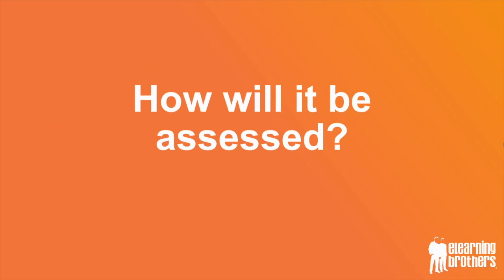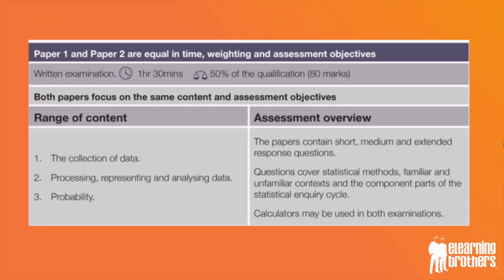Now, how is Statistics actually assessed in GCSE? Well, there are two papers of equal weighting, which means they both contribute half of your mark, and they are each an hour and a half long. They each test the entire curriculum, which is split into three sections: collecting data, processing and representing data, and the study of probability.